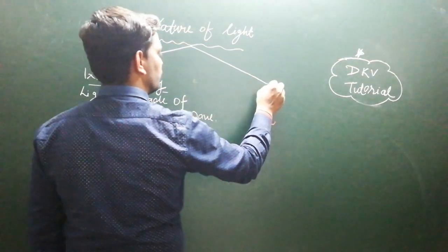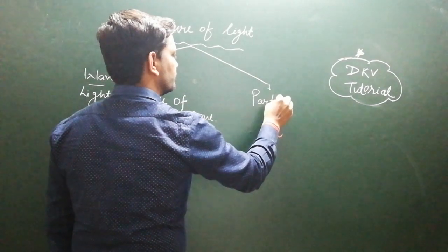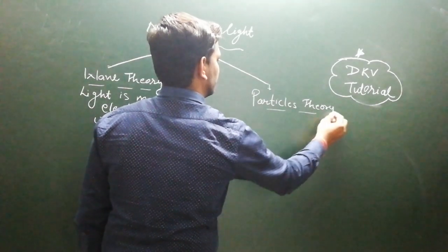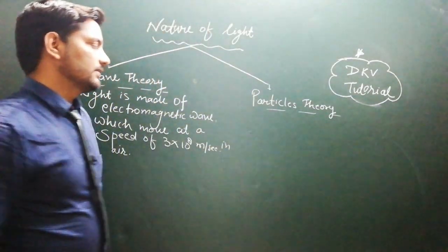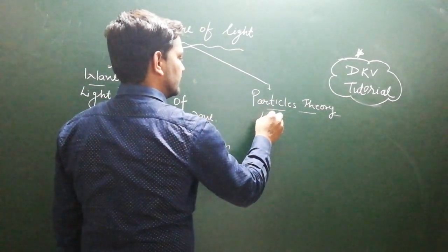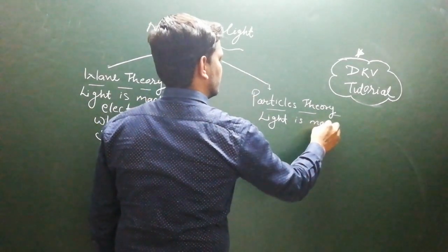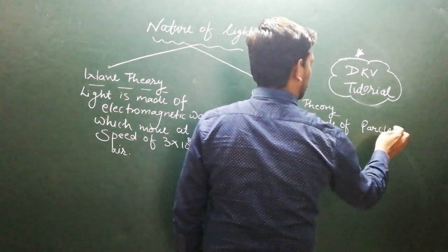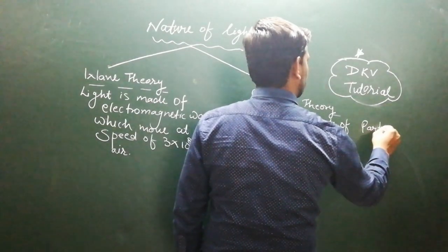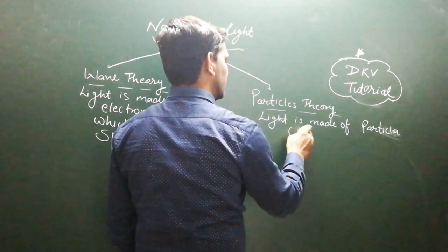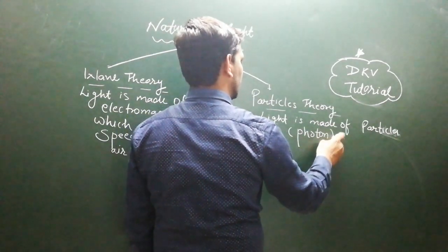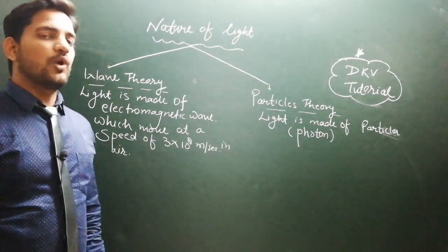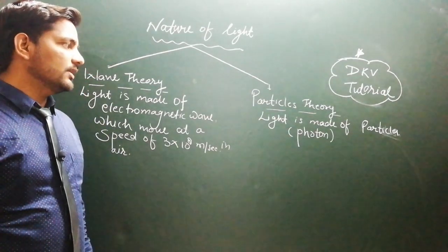However, some scientists say that light is made up of particles. According to particle theory, those scientists assumed that light is made of particles. The name of that particle is photon. This is also called quanta, which you will study in more detail in 11th class.